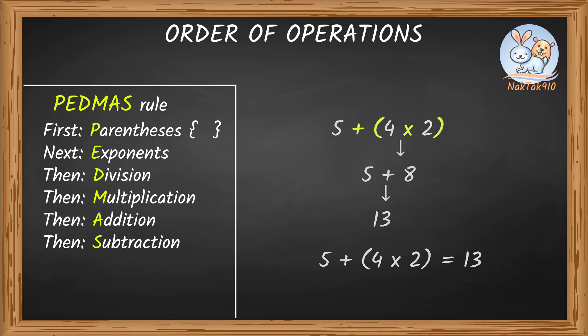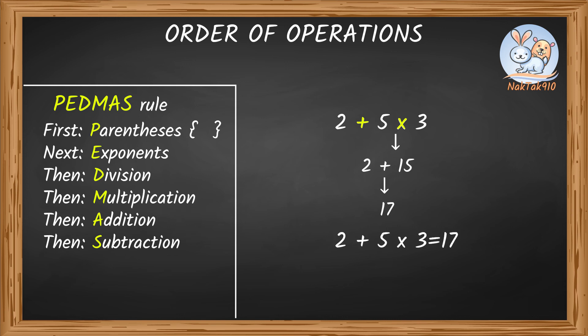Try solving this: 2 plus 5 times 3. Here we have 2 operations: addition and multiplication. Now that we have the order of operations, we have to do multiplication before addition. 5 times 3 equals 15, and then we add 2 to 15, which gives us 17. 2 plus 5 times 3 equals 17.